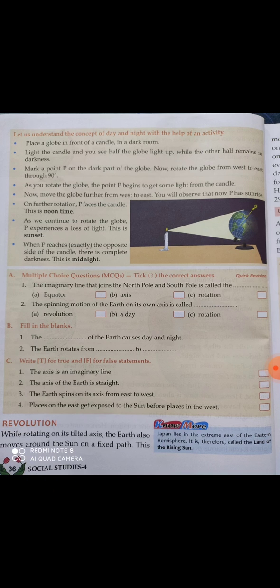First, you need a globe and a candle. Place the globe in front of a candle in a dark room — the room has to be dark, meaning the light should be off. Like shown in the picture, place the candle and the globe that way. Light the candle and you will see half of the globe light up while the other half remains in darkness.